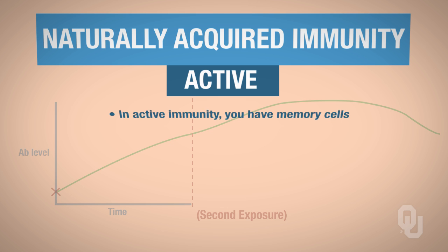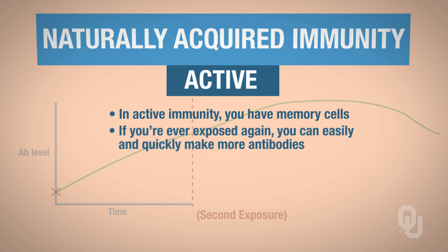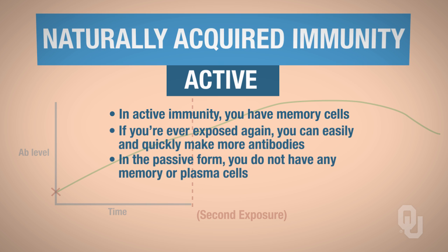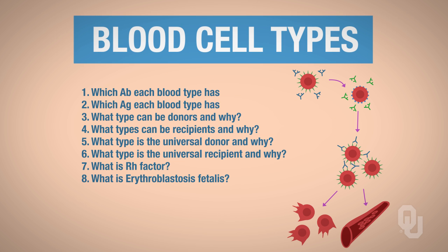However, here's the catch: in active immunity, you have memory cells. So if you are ever exposed again, you can easily and very quickly make more antibodies. Remember, in the passive form, you do not have any memory cells or plasma cells, because you weren't actually exposed to the antigen. Also, blood types are actually a form of natural immunity, which you have already experienced in lab. Be sure you understand how blood types are a form of natural immunity and know this material.